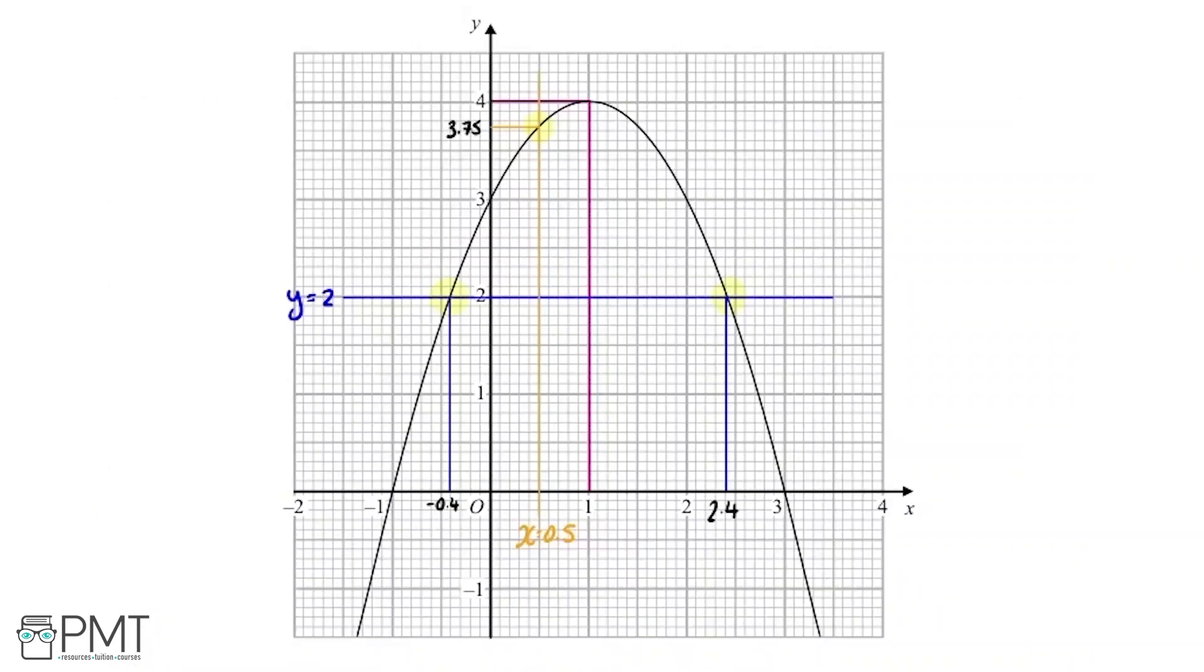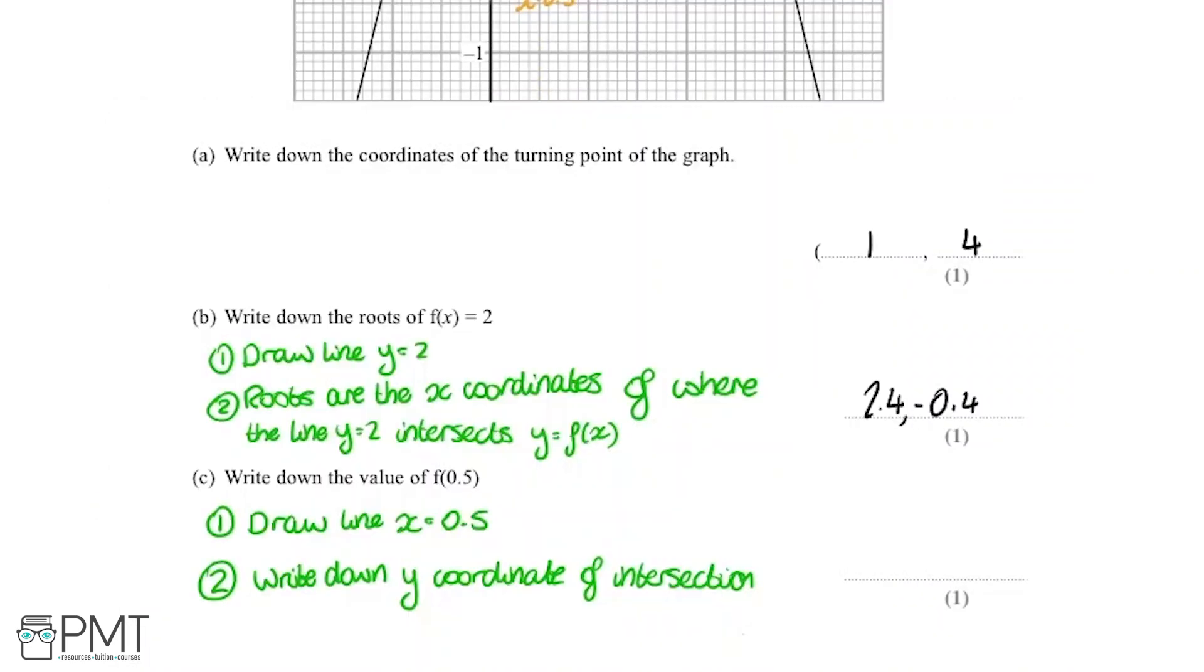Now we've worked that out, what's left to do is write 3.75 in the answer box here. In this question, you just get one mark for getting the correct answer in each part.